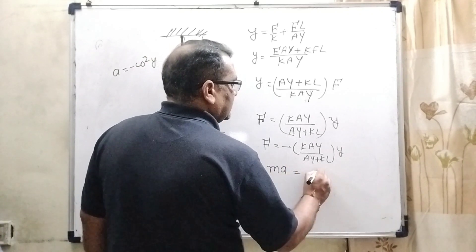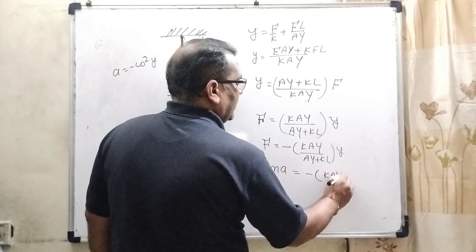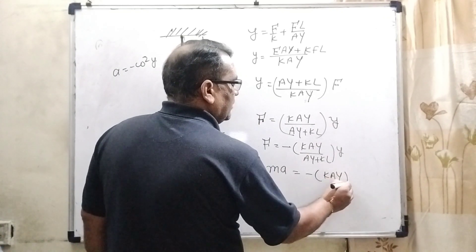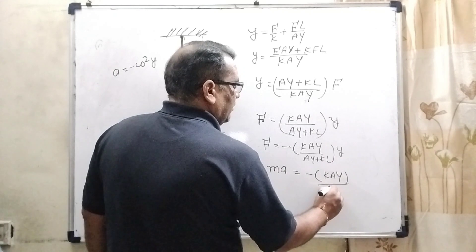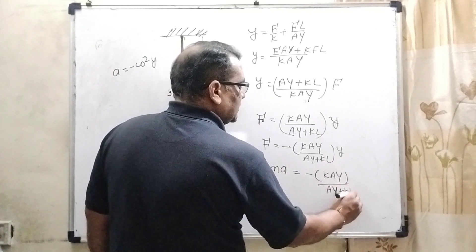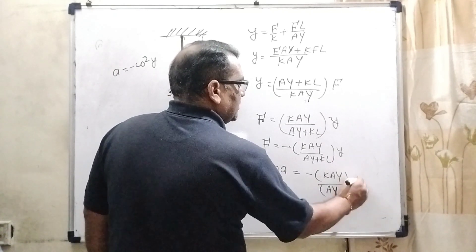So ma equals minus kAY upon (AY plus kL) times y. Capital Y means Young's modulus. Here y is displacement. So therefore it is very important where we have to write capital and where small.